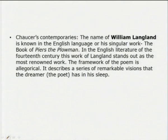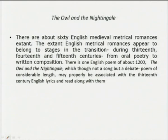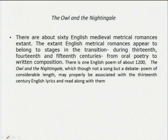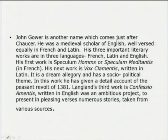The framework of Piers Plowman is allegorical — it describes a series of remarkable visions that the dreamer has in sleep. There are about 60 English medieval metrical romances extant. These English metrical romances appear to belong to stages in the transition of medieval literature during the 13th, 14th, and 15th centuries from oral poetry to written composition. There is one English poem of about 1200, the Owl and the Nightingale — which, though not a song but a debate, is a poem of considerable length — properly associated with 13th-century English lyrics.